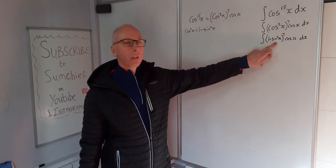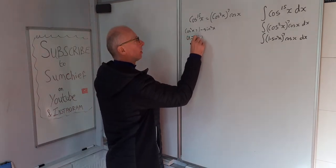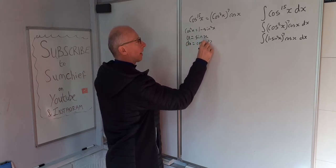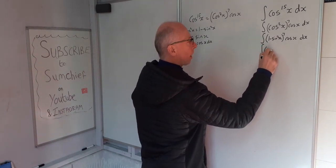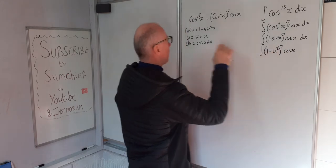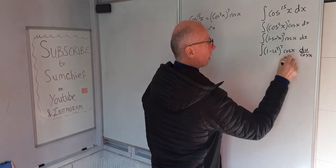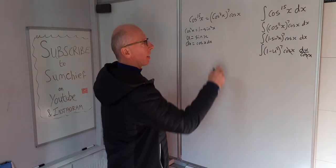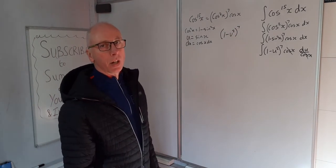Then we do the u-substitution for sine of x. So u equals sine of x, and du equals cosine of x dx. So then we go into the u-world. We've got the integral of (1 minus u squared) to the power of 7 times cosine of x, and then dx is du over cosine x — so we just cross that out. Now we're fully in the u-world, and our problem is (1 minus u²)⁷.